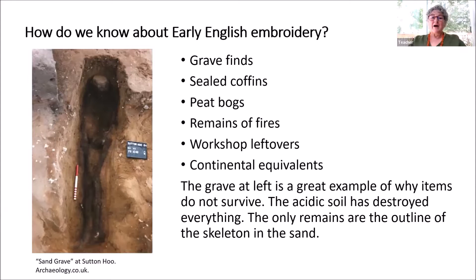How do we know about early English embroidery? We have grave finds, finds in sealed coffins, things from peat bogs, remains of fires, workshop leftovers, and we use continental equivalents — meaning what was going on on the continent that people were migrating from could have migrated to Great Britain.